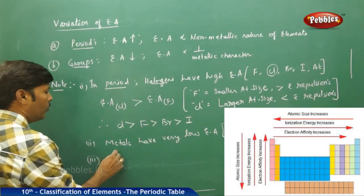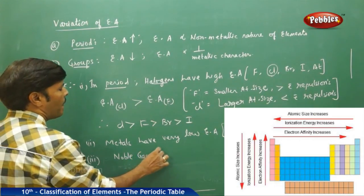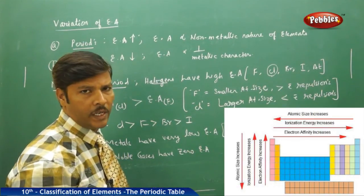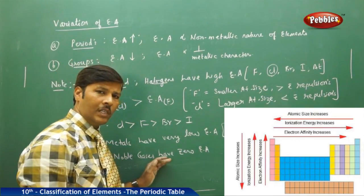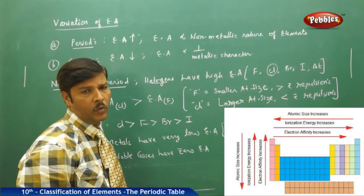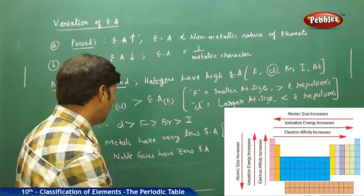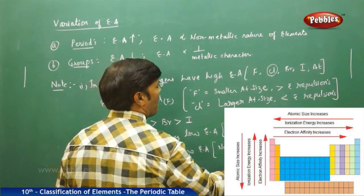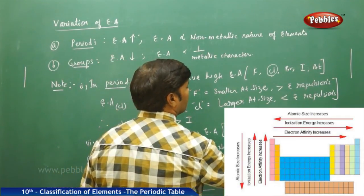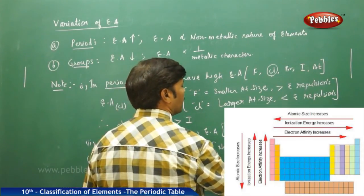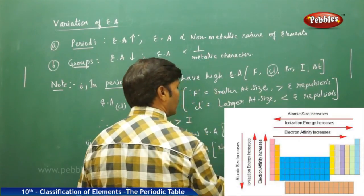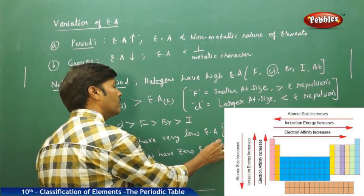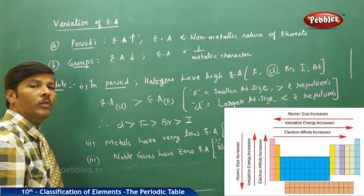Noble gases have zero electron affinity, because all noble gases neither lose electrons nor gain electrons. Electron affinity depends on the gain of electrons, and because of noble gases' inability to gain electrons, all noble gases have zero electron affinity. Noble gases do not gain electrons — that is the reason electron affinity is zero in the case of noble gases.